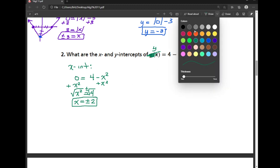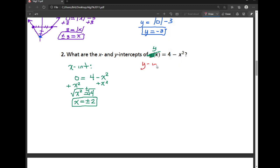So now, in order to find the y-intercept, I'm going to go ahead and plug in a 0 for x. So I have y equals 4 minus 0 squared. 0 squared is 0, so I have y equals 4 minus 0, which is just 4.